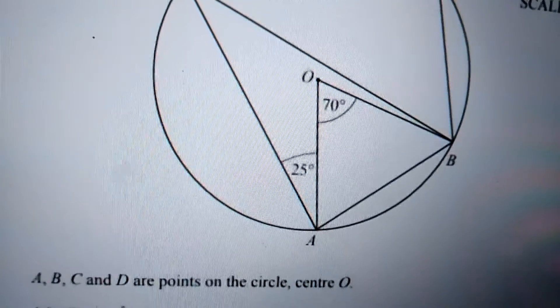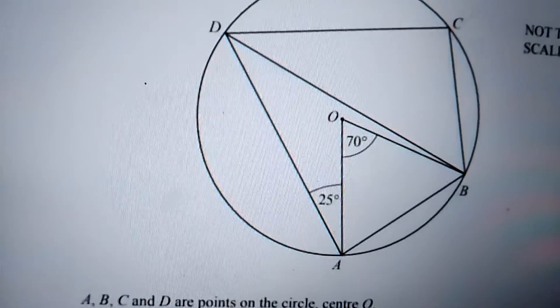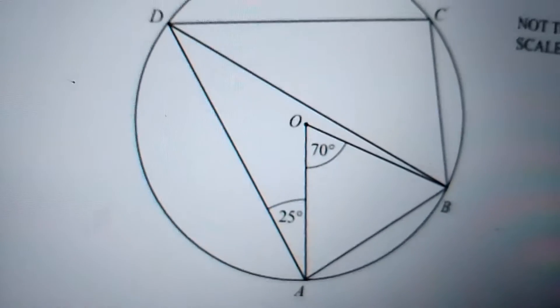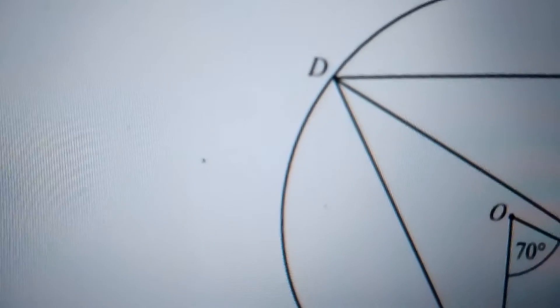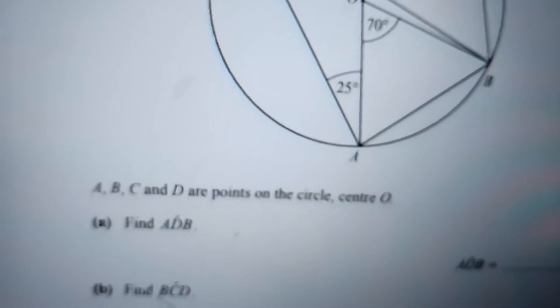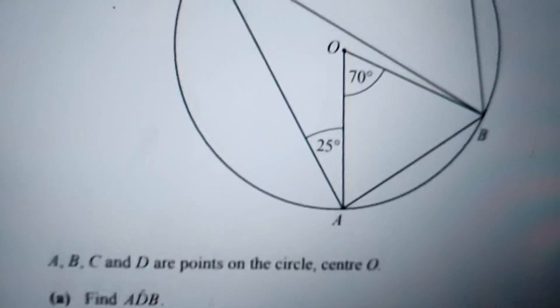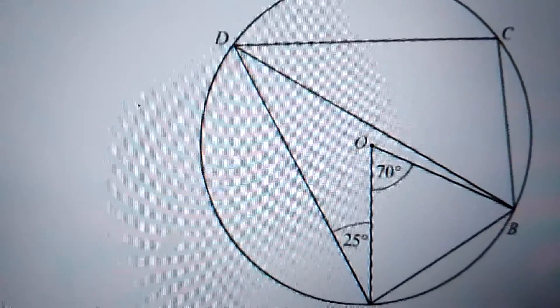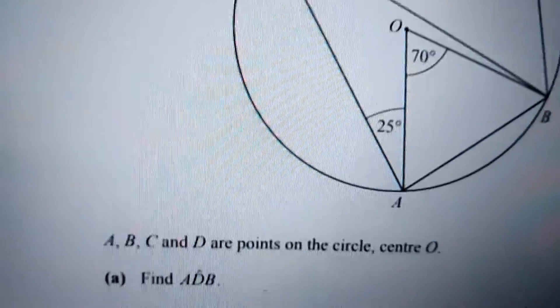What is the property of the circle? Angle at the center is twice the angle at the circumference. So ADB will be 70 divided by 2, which is 35 degrees. So your answer ADB is 70 divided by 2, which is 35 degrees.